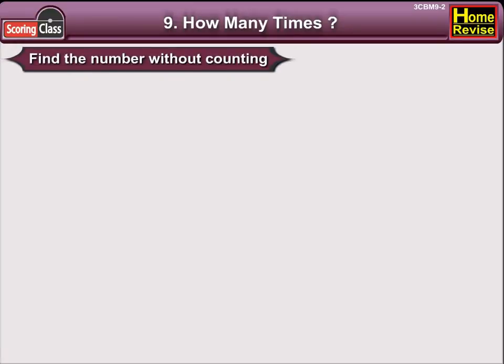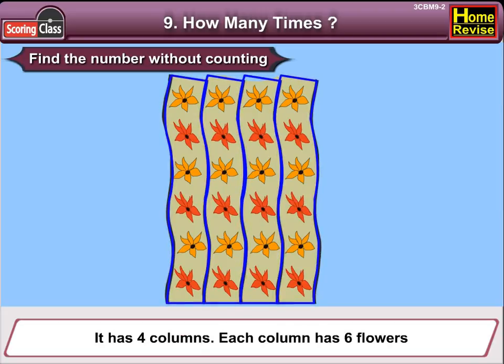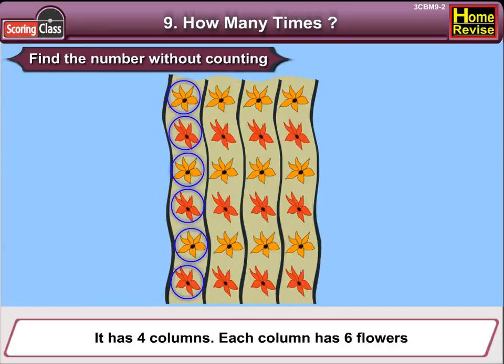Find the number without counting. How many flowers are in the flower bed? Let's see. It has 4 columns. Each column has 6 flowers.